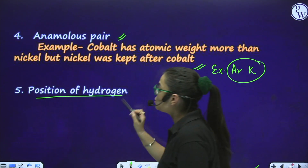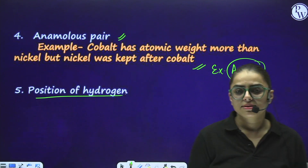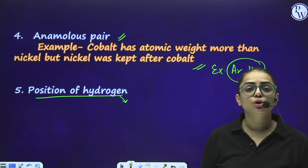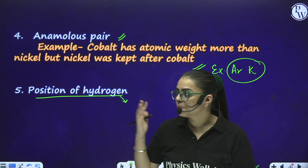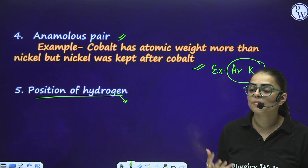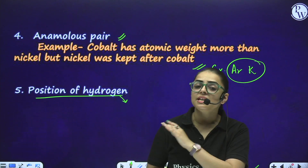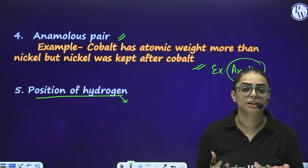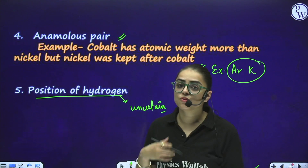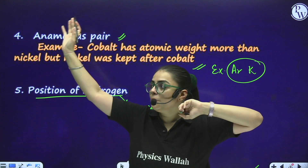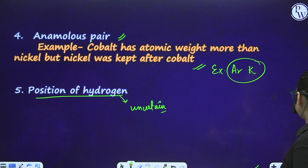The next important demerit is the position of hydrogen. Hydrogen exhibits some properties of Group 1, but also resembles properties of another group. So Mendeleev could not explain where hydrogen should be placed. The position of hydrogen was uncertain because it exhibited properties of two groups, making it very difficult to classify. This led to the failure of Mendeleev's Periodic Table. The modern form of the periodic table clearly explained all these properties.